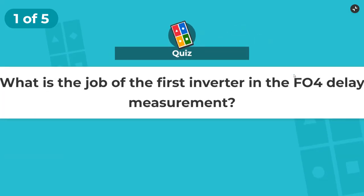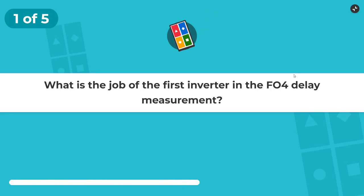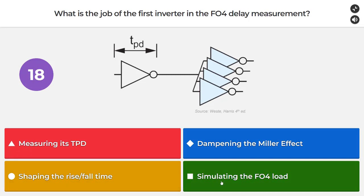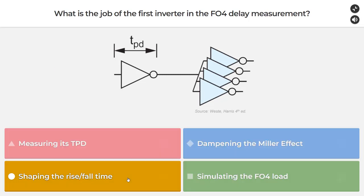In this Kahoot we'll have five questions. The first question: what is the job of the first inverter in the fan-out-4 delay measurement? Is it measuring the TPD, dampening the Miller effect, shaping the rise/fall time, or simulating the fan-out-4 load? I'm going to go for shaping the rise/fall time.